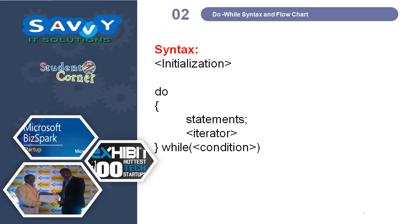Coming to the do-while loop, we are checking the condition at last. The structure is: initialization, then statements, then iterator, and the while condition is checked at the end.